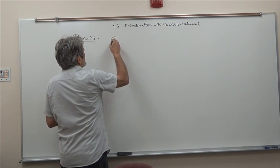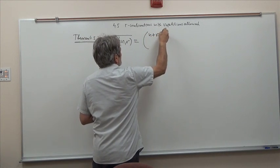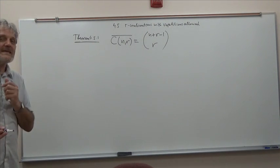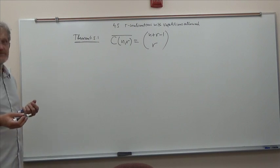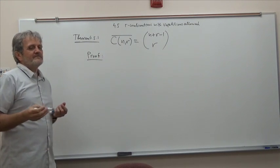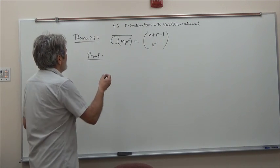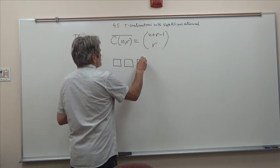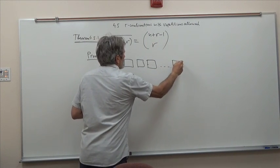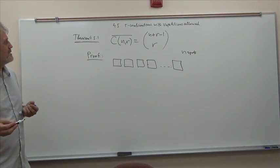But we can come up with a formula, and that formula is in Theorem 4.5.1. We can say: C(n,r) with repetition equals C(n+r-1, r). The proof is nice and has the famous idea of stars and bars.